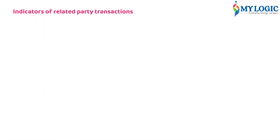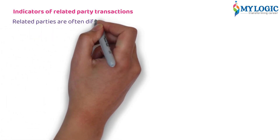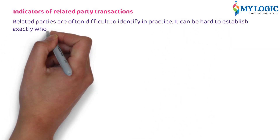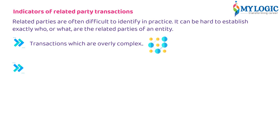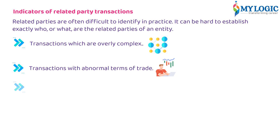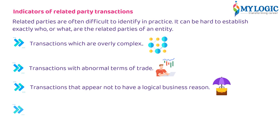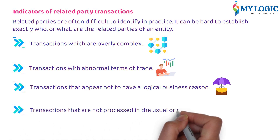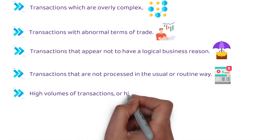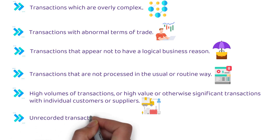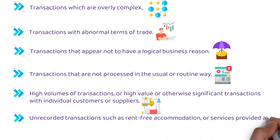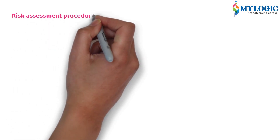Indicators of related party transactions: related parties are often difficult to identify in practice, and it can be hard to establish exactly who or what are the related parties of an entity. Indicators include: transactions which are overly complex; transactions with abnormal terms of trade; transactions that appear not to have a logical business reason; transactions that are not processed in the usual or routine way; high volumes or high-value transactions with individual customers or suppliers; and unrecorded transactions such as rent-free accommodation or services provided at no cost.